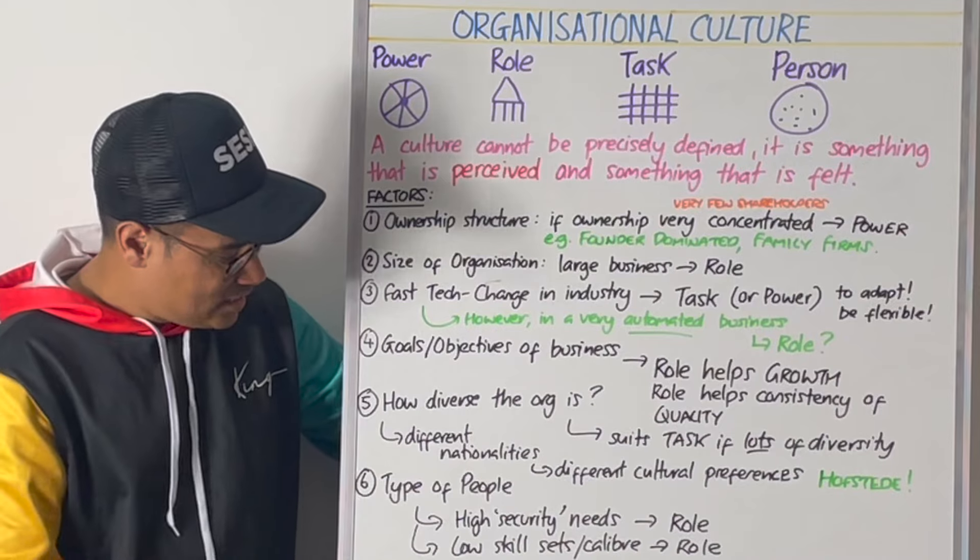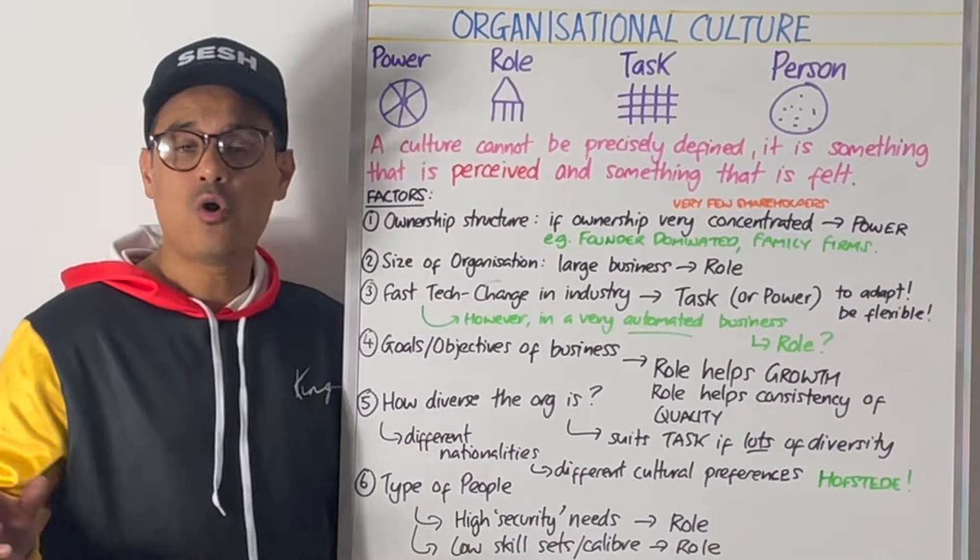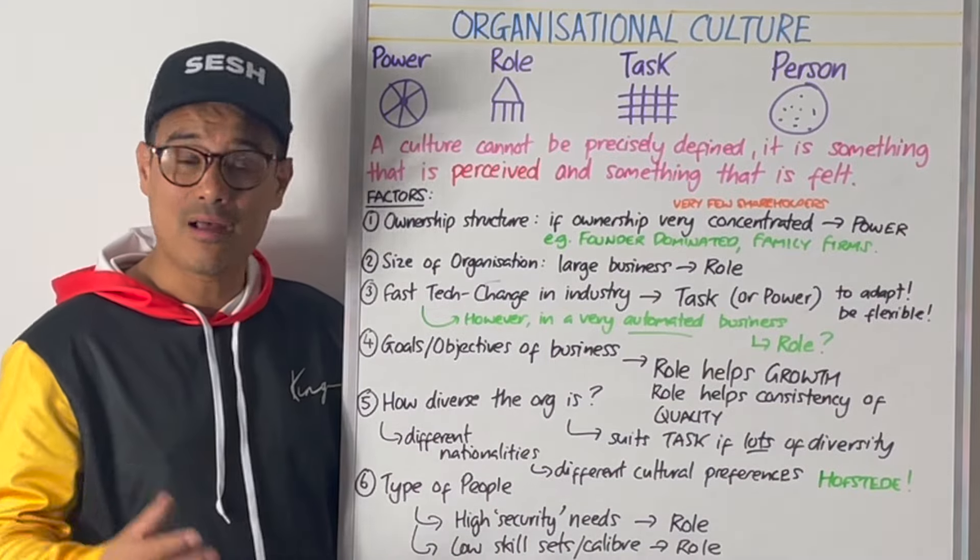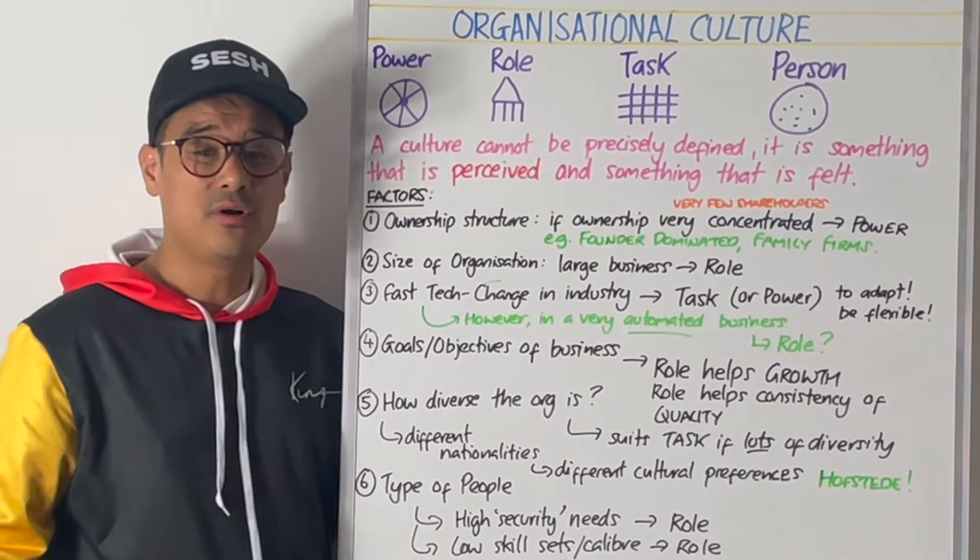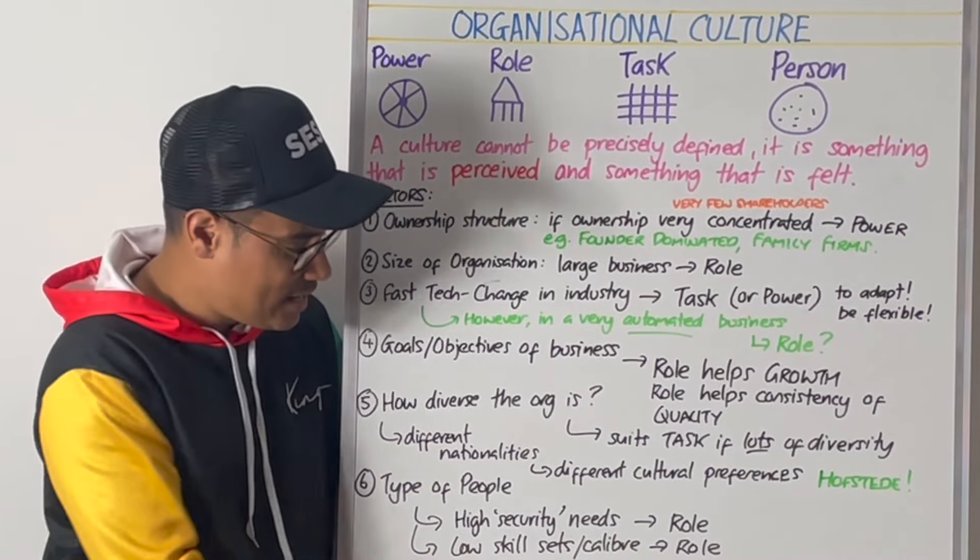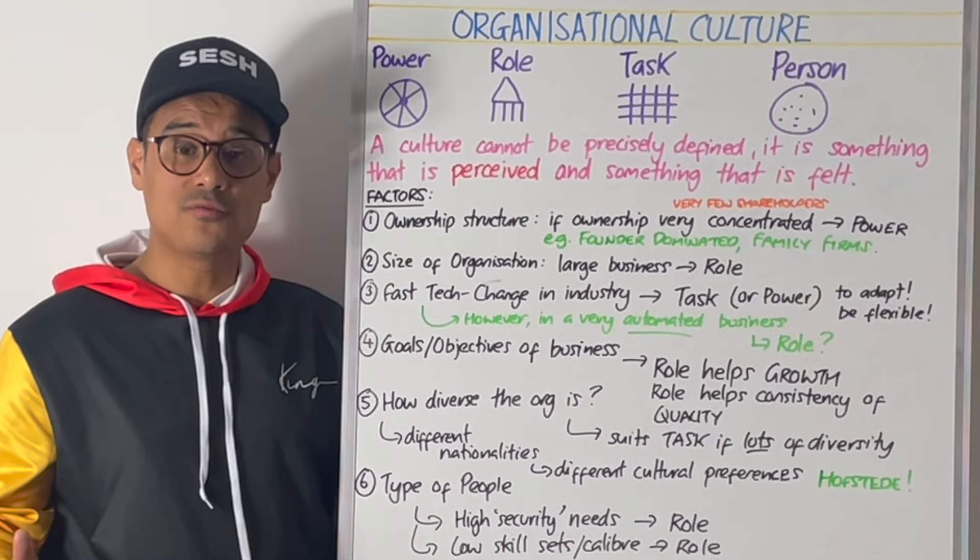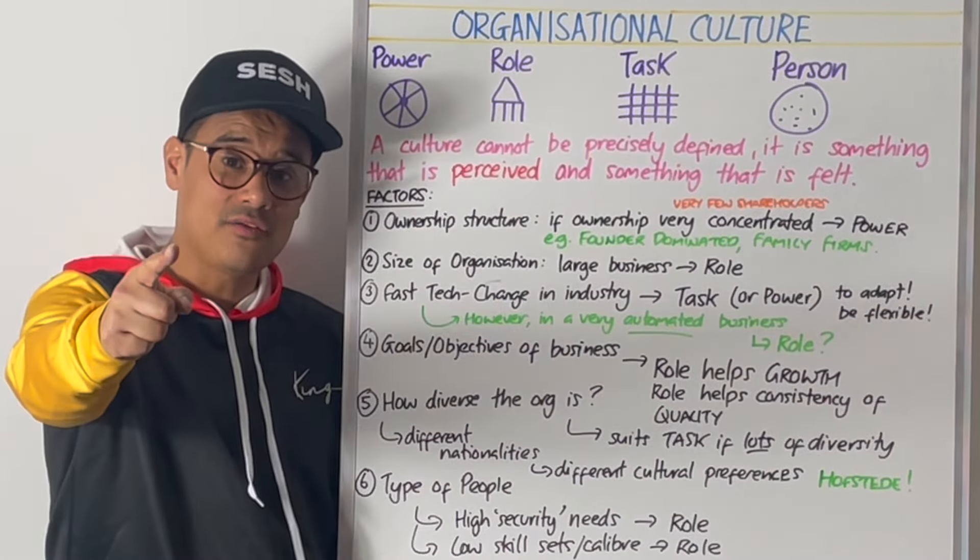Next thing to think about is the type of people in your organisation. If you've got workers with high security needs, you're thinking about Maslow here, then role culture might make sense. And if you've got low calibre, low skilled employees, then again role culture might make sense for them. I hope that helps with that mega session and I'll see you at the next session.